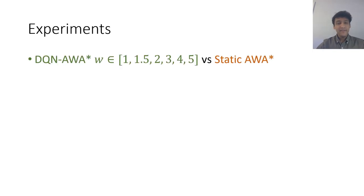For our experiments we compared DQN having access to weights 1, 1.5, 2, 3, 4, and 5 against static AWA star with a weight of 1, static AWA star with a weight of 1.5, and so on, the same set of weights. These weights have been found to work well in prior literature. We had a small neural network with two hidden layers and we used Epsilon Greedy for exploration.